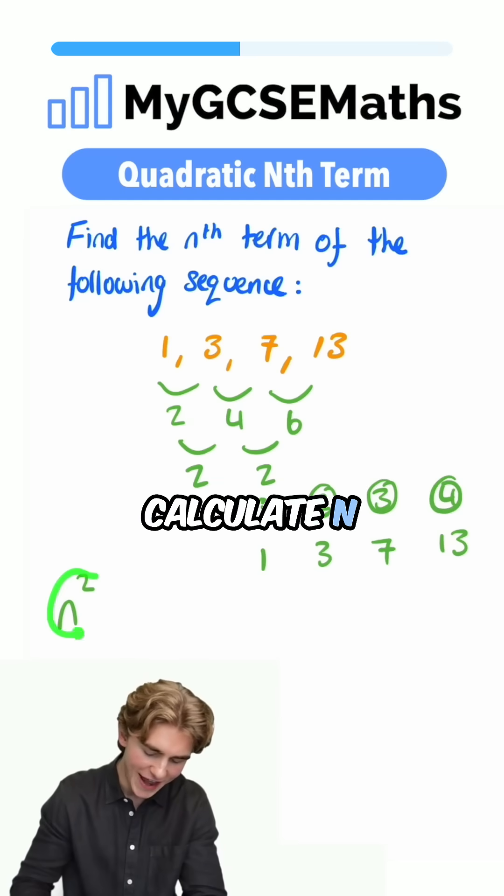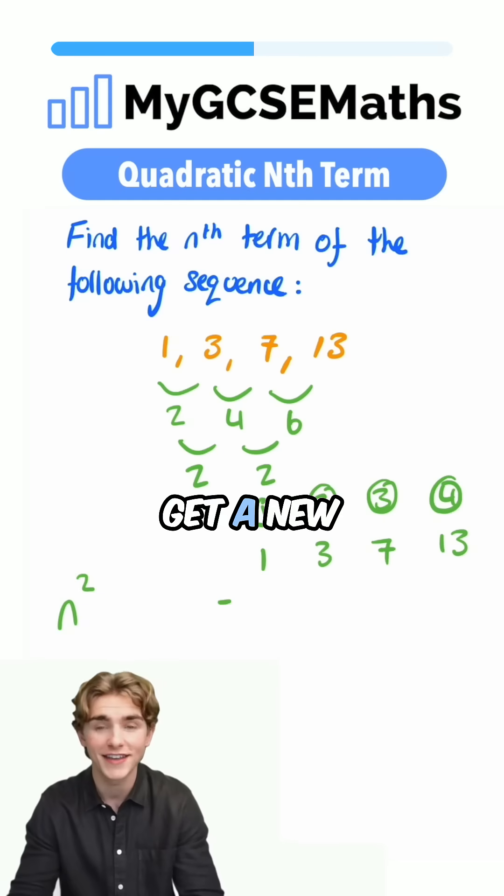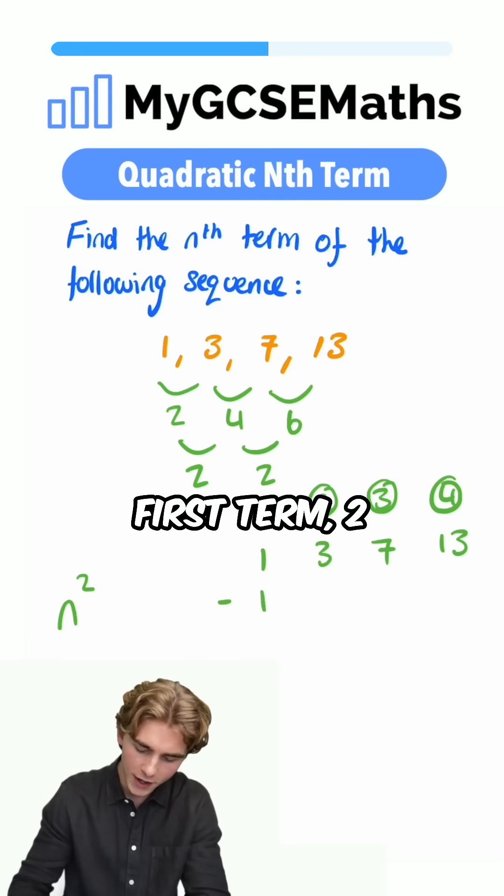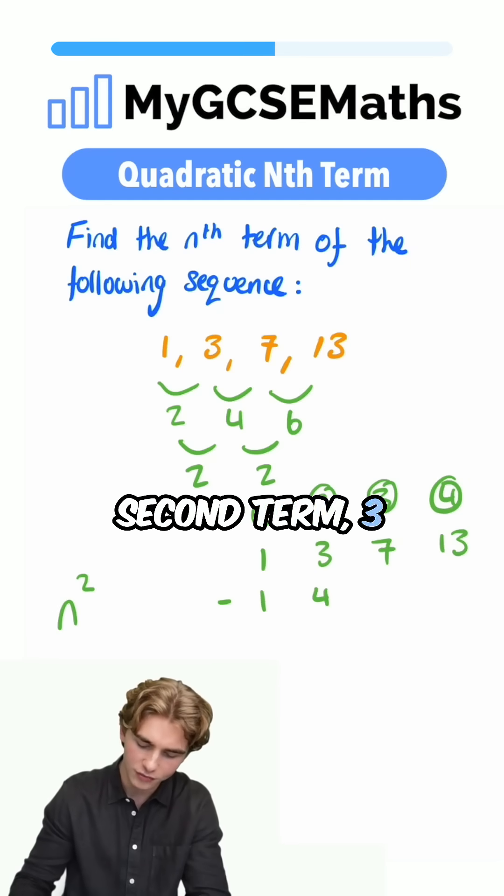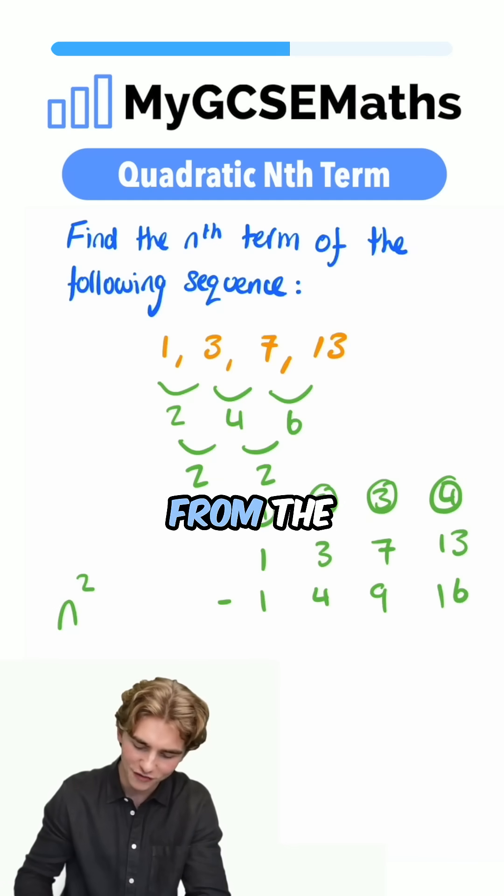What next? We're going to calculate n squared, our term number squared, and we're going to subtract that from our sequence to get a new sequence. So we're going to take 1 squared, which is 1 from the first term, 2 squared, which is 4 from the second term, 3 squared, which is 9 from the third term, and 4 squared, which is 16 from the fourth term.